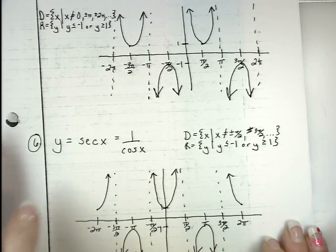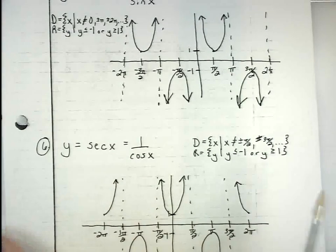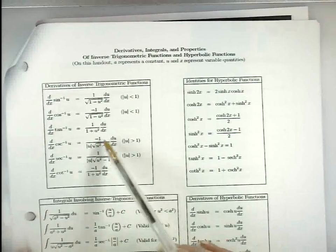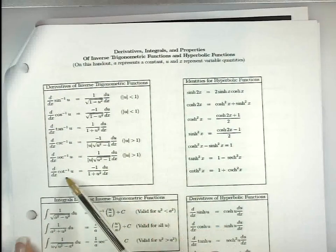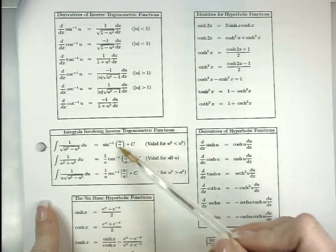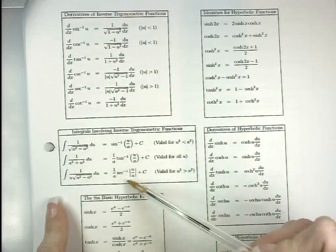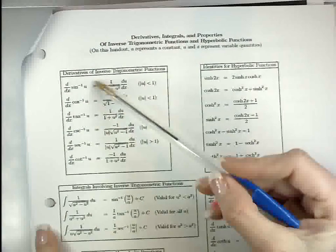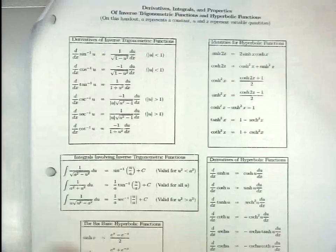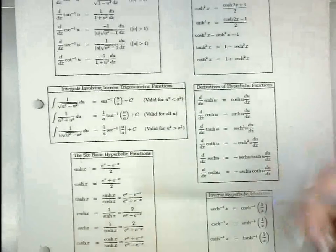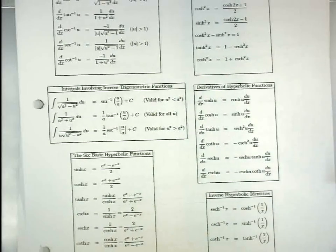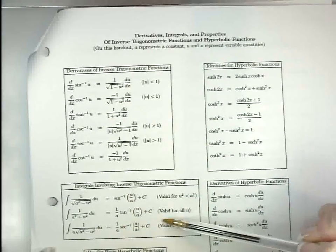The focus of Section 6.7 is not the trig functions themselves, but their inverses. The next two handouts deal with the derivative formulas and integral formulas for the inverse trig functions. For the integral formulas it's just inverse sine, inverse tangent, and inverse secant, but the sheet does have derivative formulas for all six. The rest of the handout covers hyperbolics, which we'll do in Section 6.8. For now, Section 6.7 will only focus on those two formula boxes.